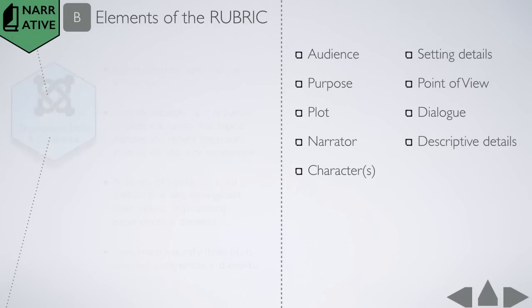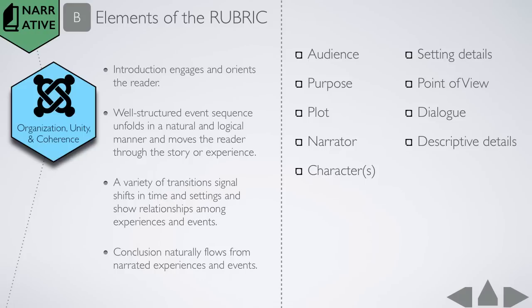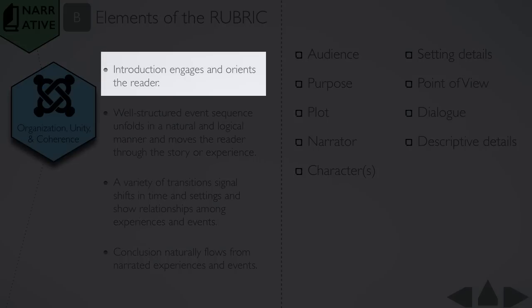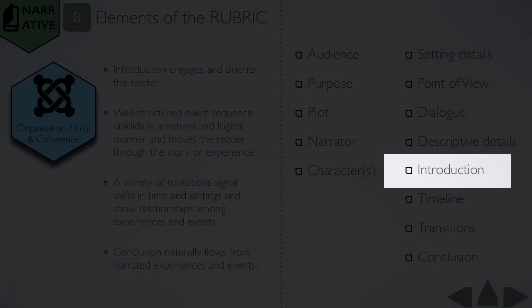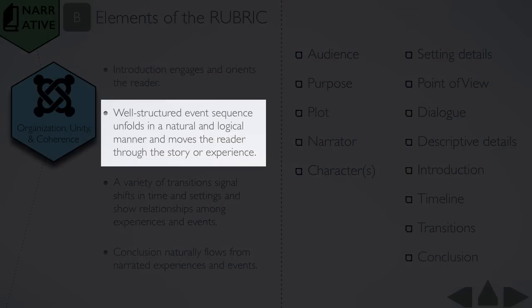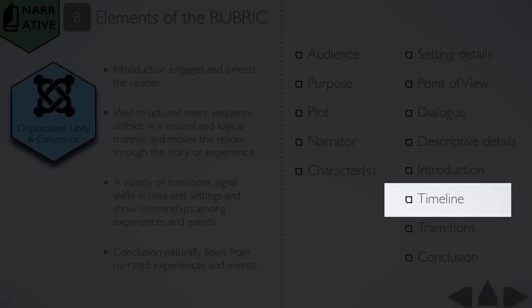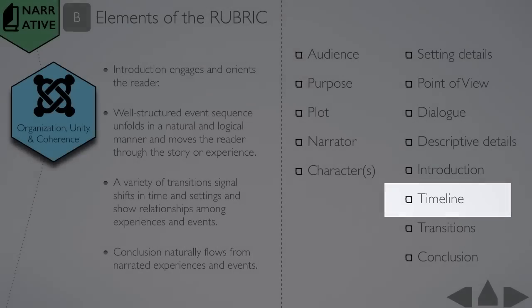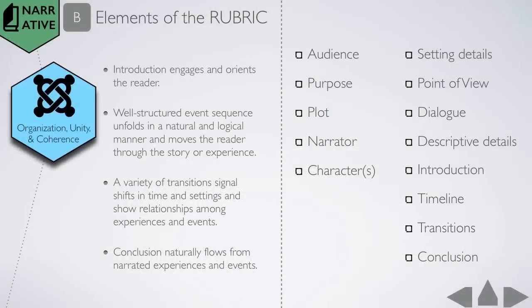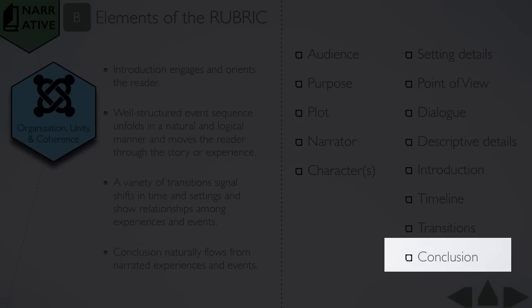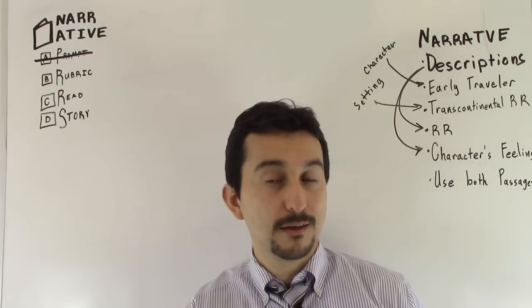Now let's look at organization, unity, and coherence. Same situation we got here. We have four bullet points taken from the score four part of the narrative rubric, and it says introduction engages and orients the reader. So we have to have an introduction. Well, that's kind of a given. If you follow the basic plot line, you're going to have an introduction and a conclusion. Well-structured event sequence unfolds in a natural and logical manner and moves the reader through the story or experience. Okay, so it has to follow a timeline essentially or plot diagram. And a variety of transitions signal shifts in time and settings and show relationships among experiences and events. Transitions. You have a natural flow of transitions and timelines incorporated in there, and of course conclusion. Beginning and end.